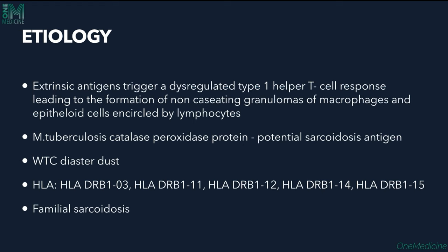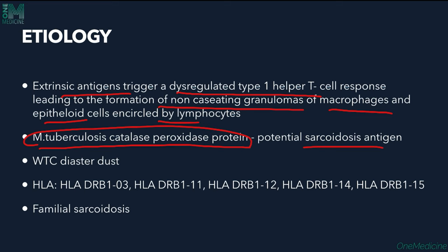Regarding etiology, an extrinsic antigen triggers a dysregulated type 1 helper T-cell response, leading to the formation of non-caseating granulomas of macrophages and epitheloid cells encircled by very few lymphocytes. Mycobacterium tuberculosis catalase-peroxidase protein functions as an antigen and triggers granuloma formation. Also, World Trade Center disaster dust is known to trigger or act as an antigen in causing sarcoidal granulomas.